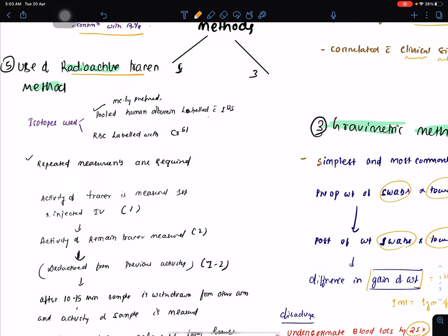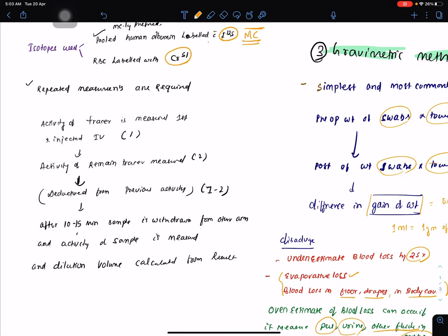The fifth one is use of radioactive tracer techniques. Isotopes used are pooled hemoglobin labeled with iodine-125—it is the most commonly preferred method—and RBC labeled with chromium-51. Repeated measurements are required to estimate the blood loss.